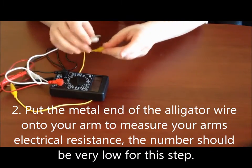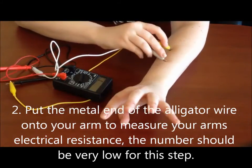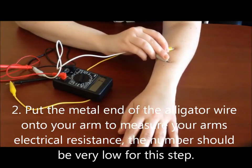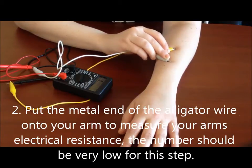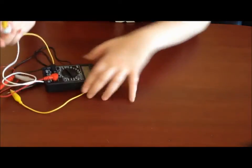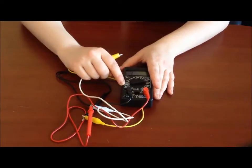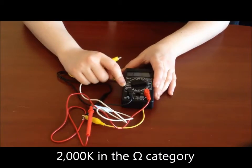You're just going to stick the alligator clips right onto your arm, just kind of hold them right on your arm. And then you're going to write down the measurement that you get on your multimeter, which will show up on the screen, and make sure that your multimeter is set to 2000K in the Omega category. That's very important for doing this measurement.